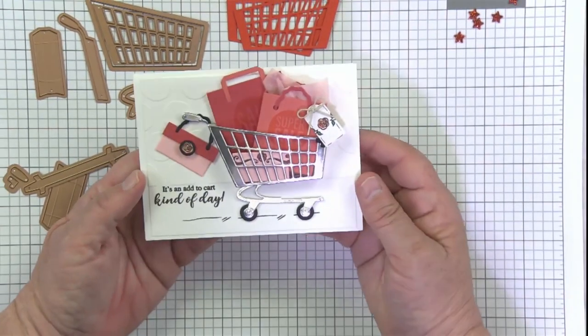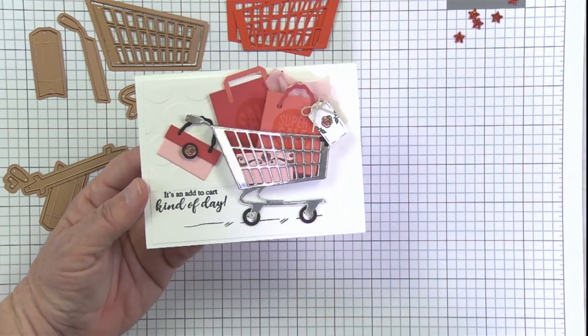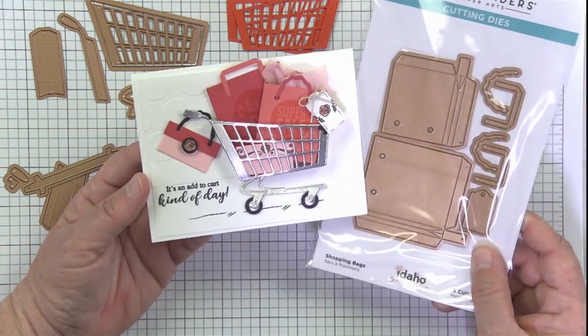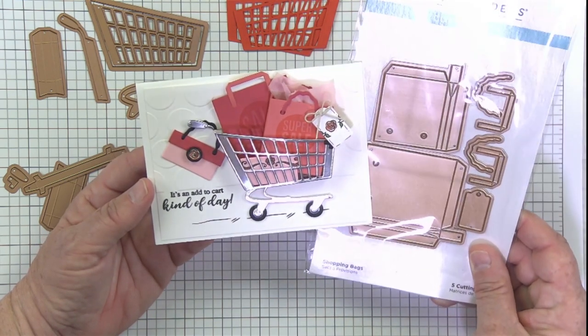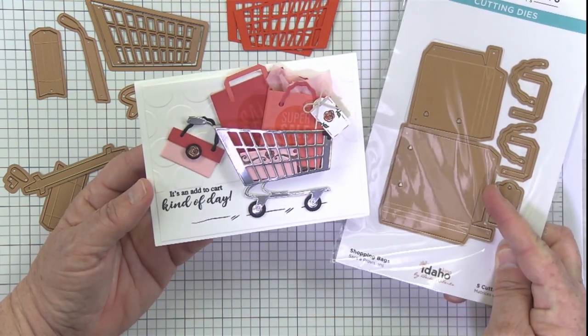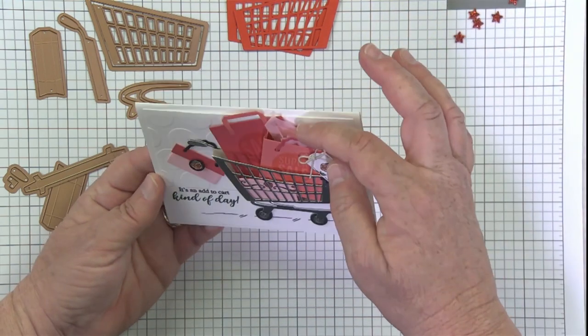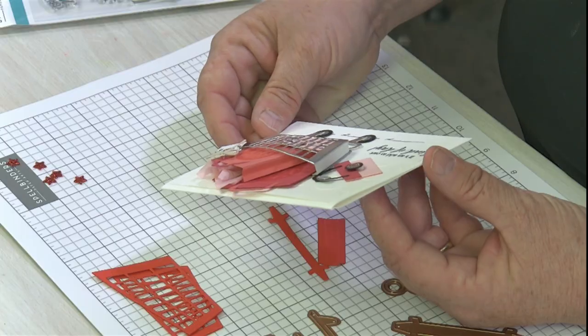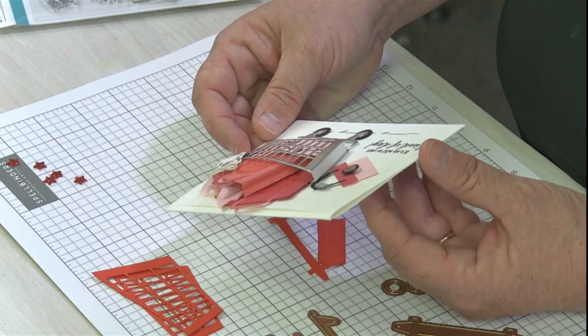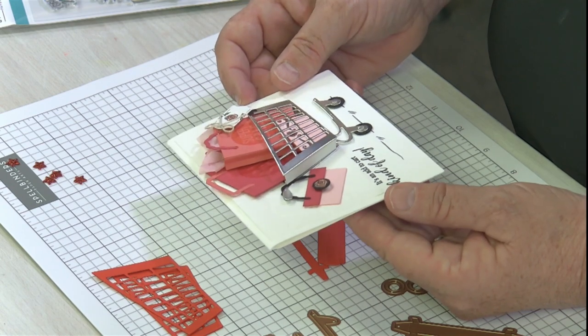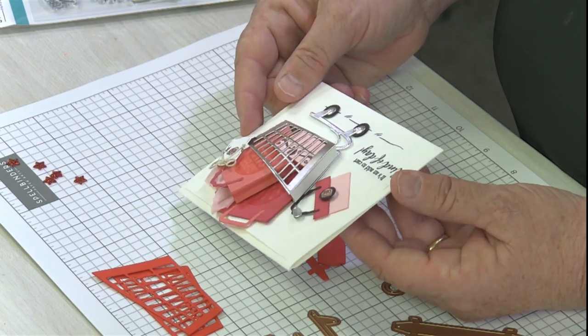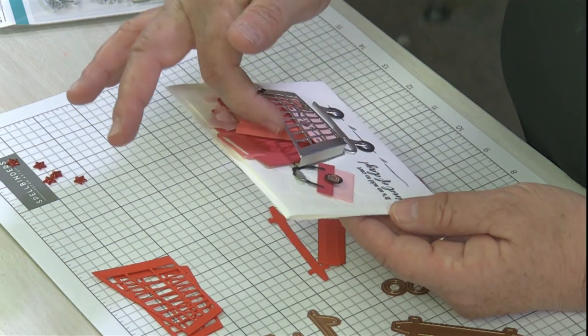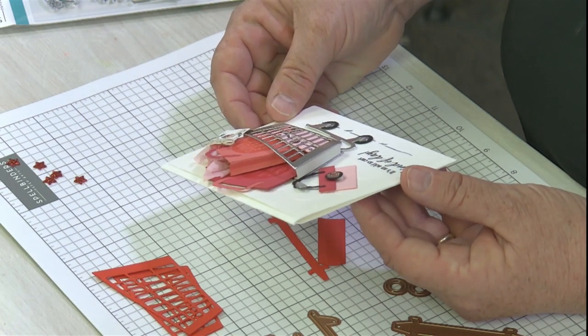Let me show you one card that Becky created before I start my crafting. This features not only the shopping cart but also the cute little shopping bags. You just cut these guys out twice and fold them and they become super cute and dimensional. Look, she got the little tissue paper in there. What you're going to see right now is the shopping cart come to life. It's 3D, it's got this really great 3D element. You can put all the little items in here.